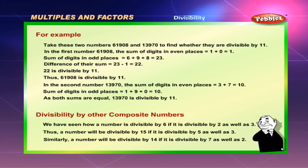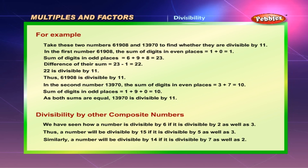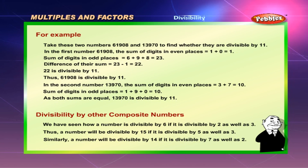For the second number, 13,970: sum of digits in even places = 3 + 7 = 10; sum of digits in odd places = 1 + 9 + 0 = 10. Since both sums are equal, 13,970 is divisible by 11.